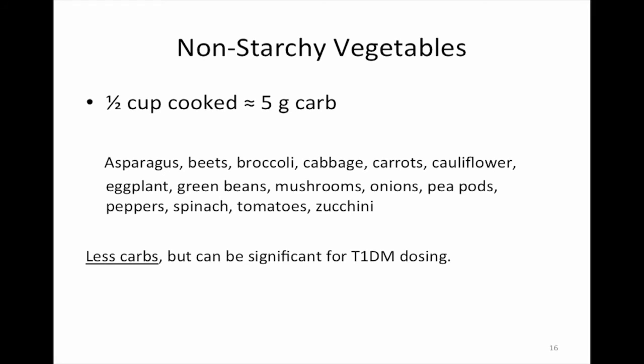Non-starchy vegetables — things like asparagus, beets, broccoli, cauliflower, and carrots — have a little bit of carbohydrate, though not as much as other foods. A half cup cooked is about 5 grams of carbohydrate, but that can still be significant for somebody dosing insulin exactly, such as a type 1.